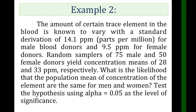Let's have example 2. The amount of a certain trace element in the blood is known to vary with a standard deviation of 14.1 ppm for male blood donors and 9.5 ppm for female donors. Random samples of 75 male and 50 female donors yield concentration means of 28 and 33 ppm respectively. What is the likelihood that the population means of concentration of the element are the same for men and women? Test the hypothesis using alpha equals 0.05 as the level of significance.